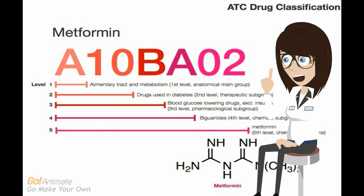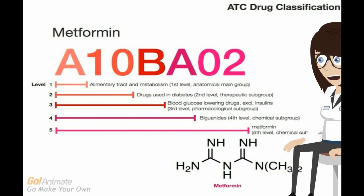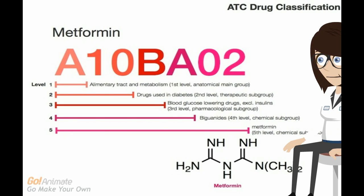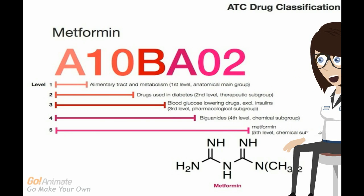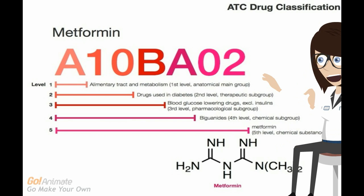The number 10 is added next to the letter A. In the third level, metformin is categorized as blood glucose-lowering drugs, and this pharmacological subgroup is coded with the letter B. The fourth and fifth levels further assign metformin as a subgroup of biguanides and finally to the specific pharmaceutical substance.